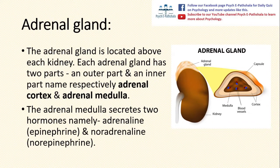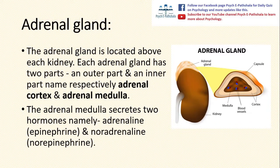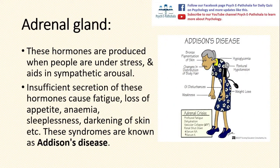The next gland is the adrenal gland, located above each kidney. Each adrenal gland has two parts: an outer part called the adrenal cortex and an inner part called the adrenal medulla. The adrenal medulla secretes two hormones — adrenaline (also known as epinephrine) and noradrenaline (also known as norepinephrine). These hormones are produced when people are under stress and aid in sympathetic arousal. Insufficient secretion of these hormones causes fatigue, loss of appetite, anemia, sleeplessness, and darkening of skin — these syndromes are known as Addison's disease.